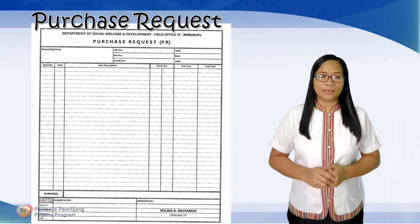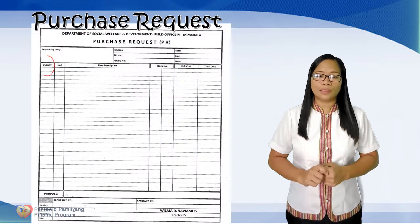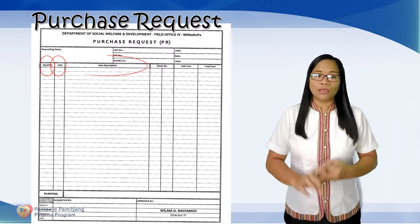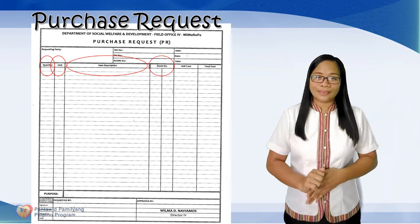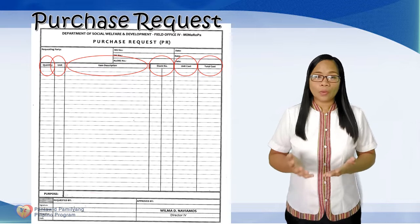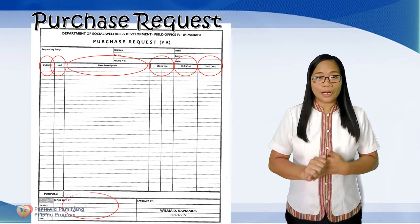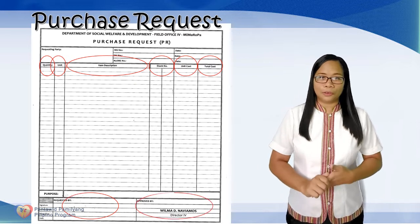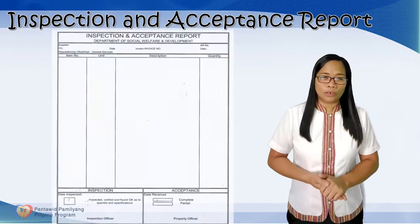Purchase Request. The Purchase Request should also indicate the quantity, unit, item description, stock number, unit cost, and the total cost. It should also be signed or requested by our Regional Program Coordinator and approved by the Regional Director.